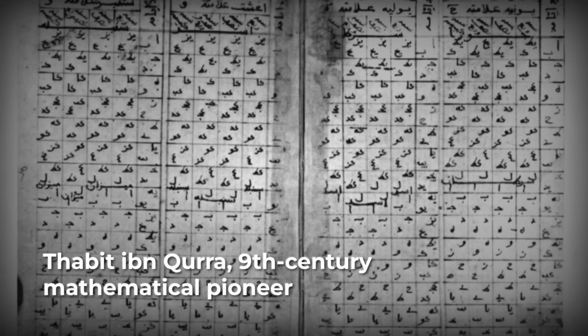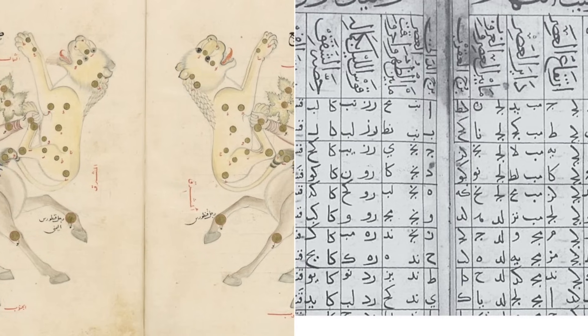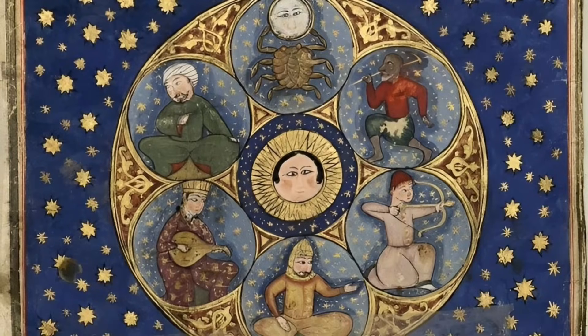Thabit ibn Khura, another giant of this era, translated and expanded on Greek works, refining the methods for handling these tiny fractions. In their hands, base 60 was not just a relic, but a living language for the universe.